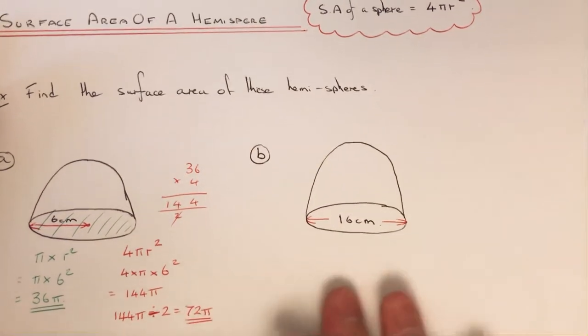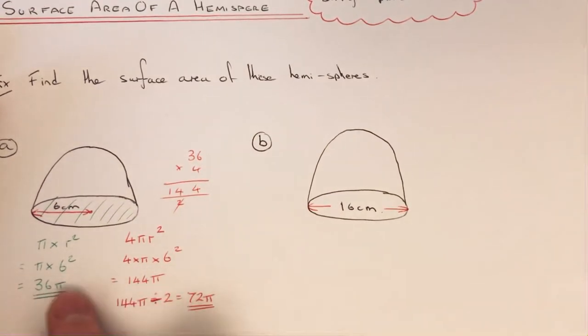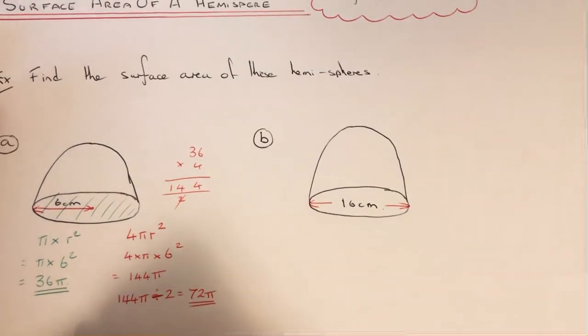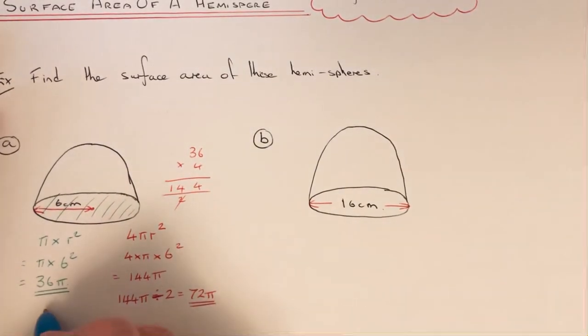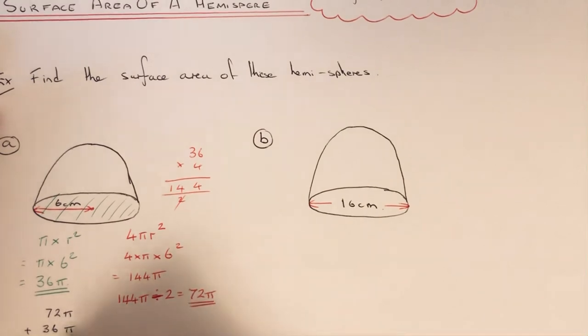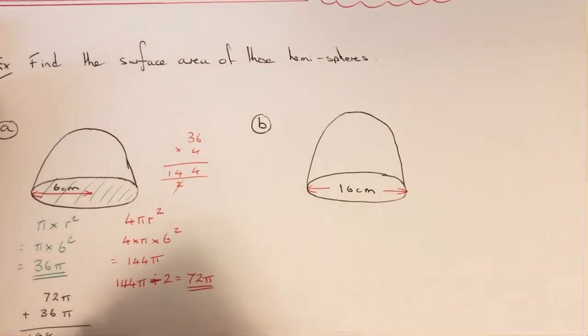So these answers here are the area of the two faces that we have. So the final thing to do then is add these two numbers up. So we've got 72π and 36π, so that gives us 108π.